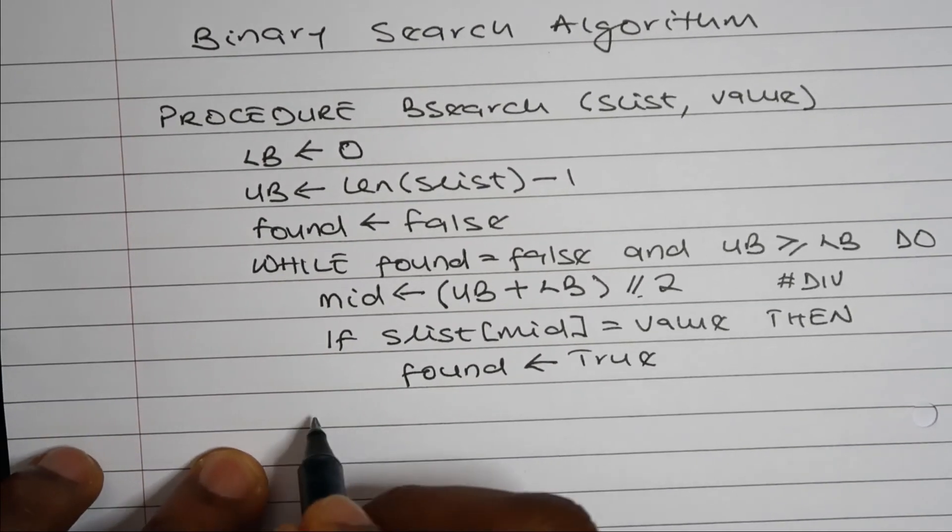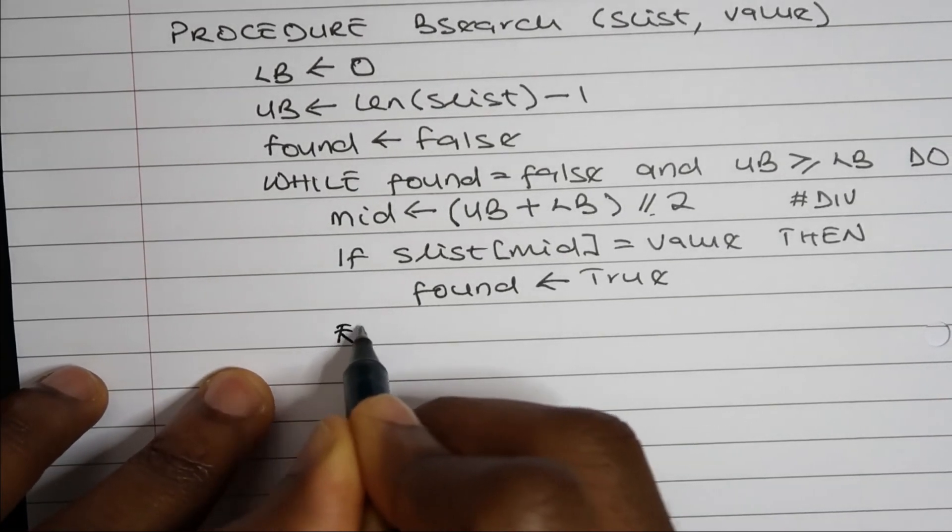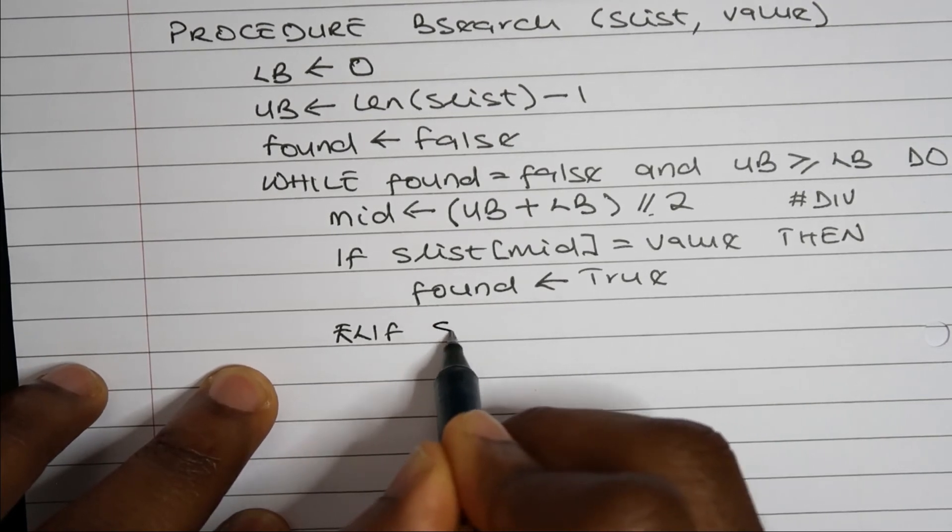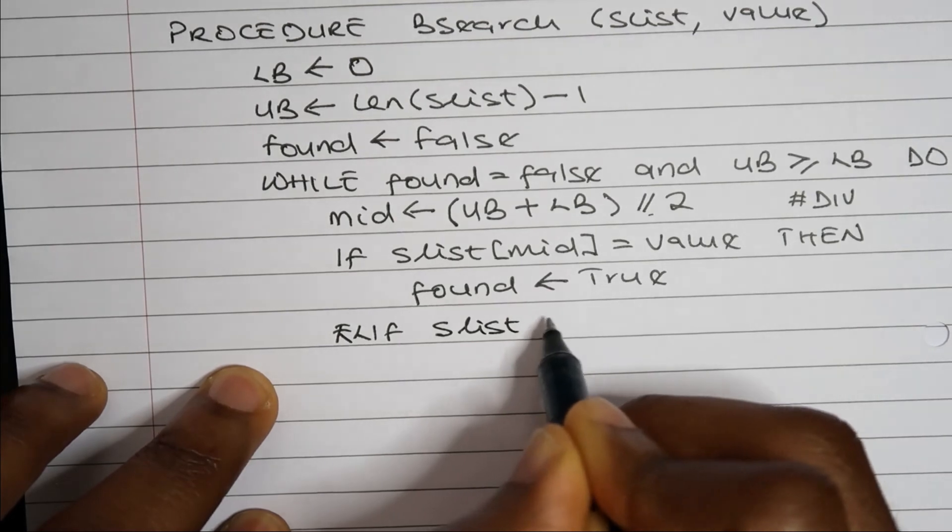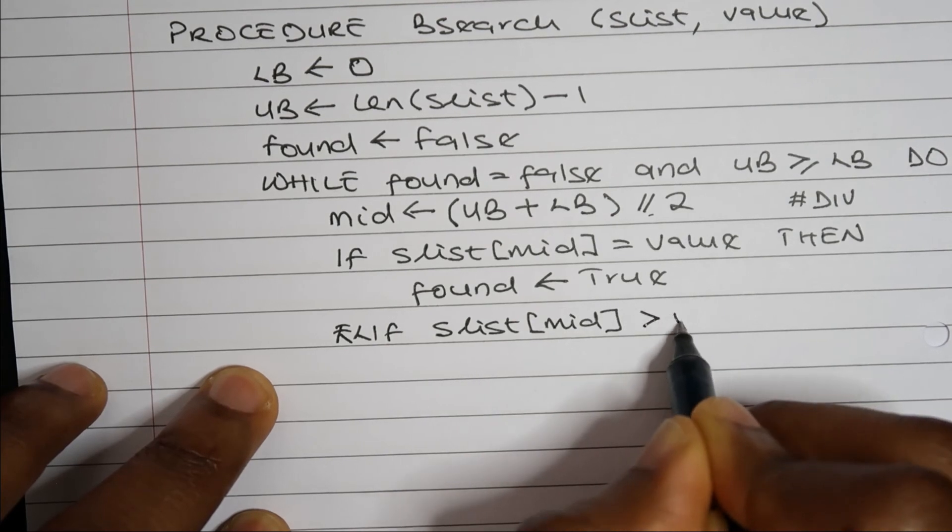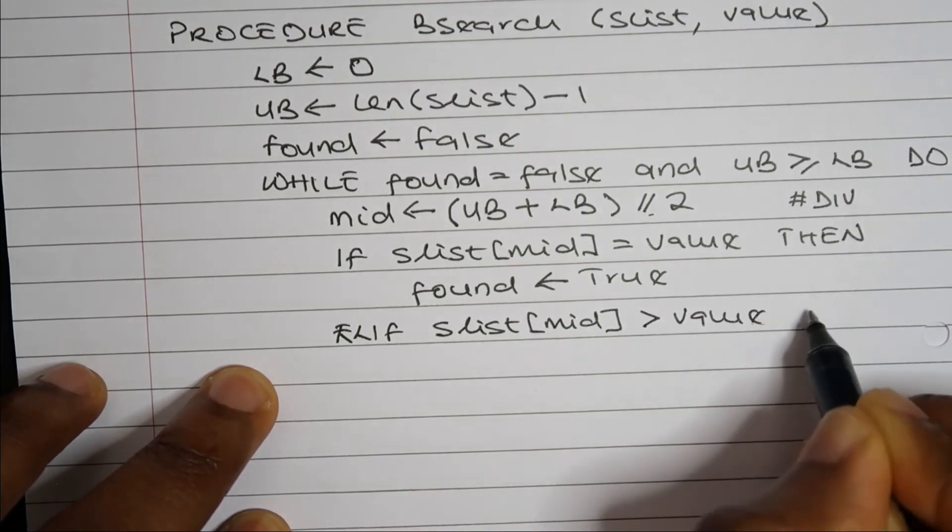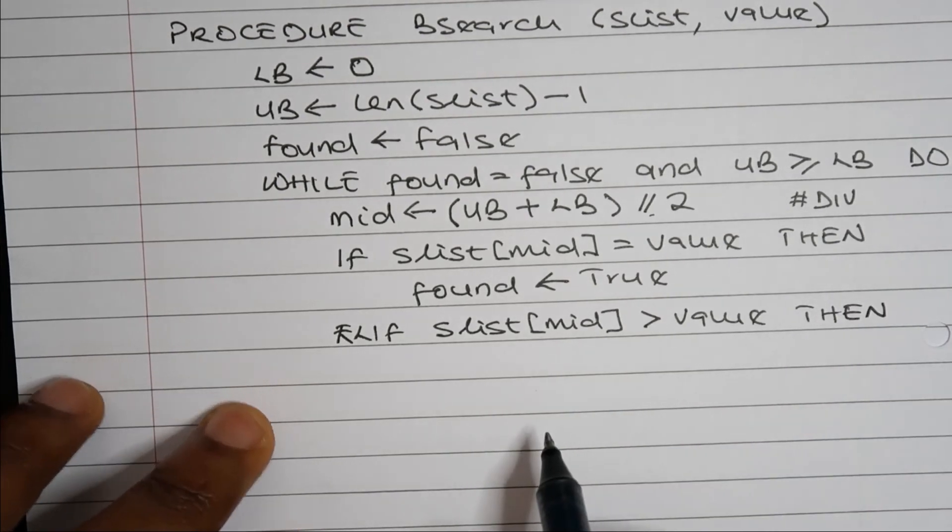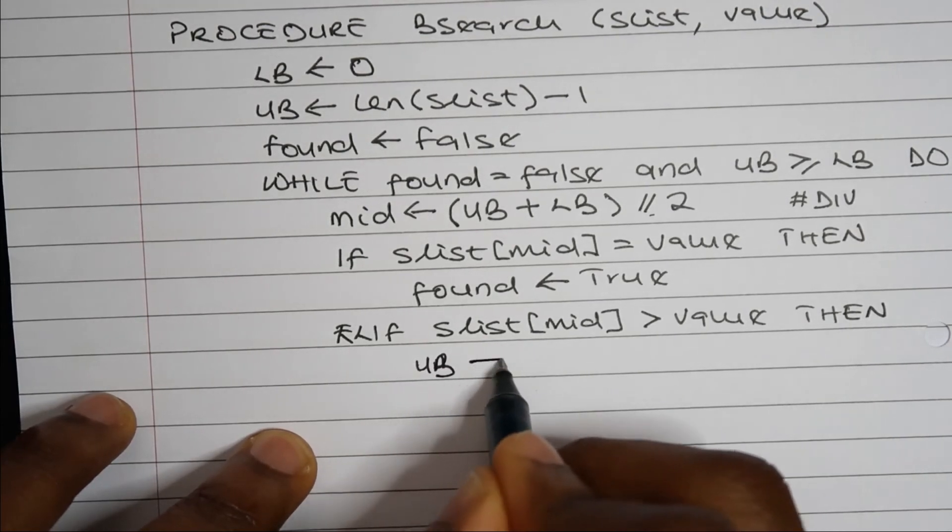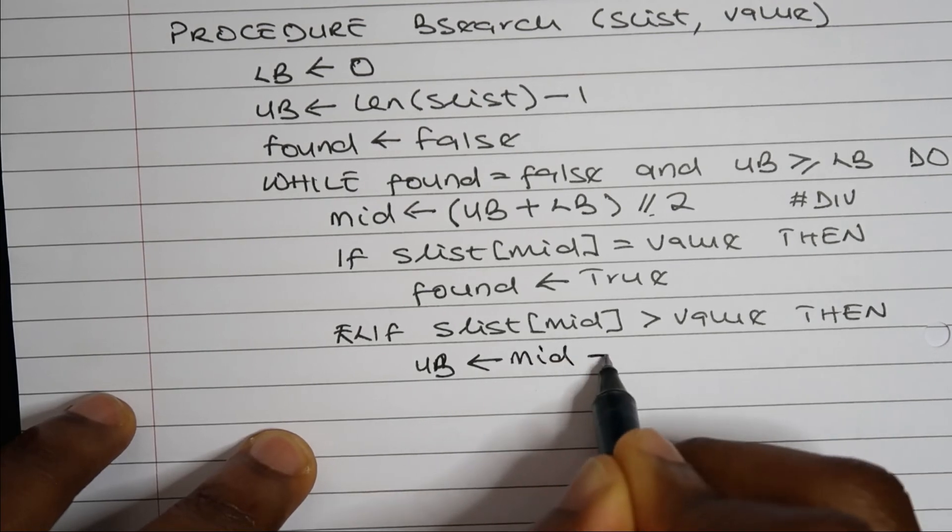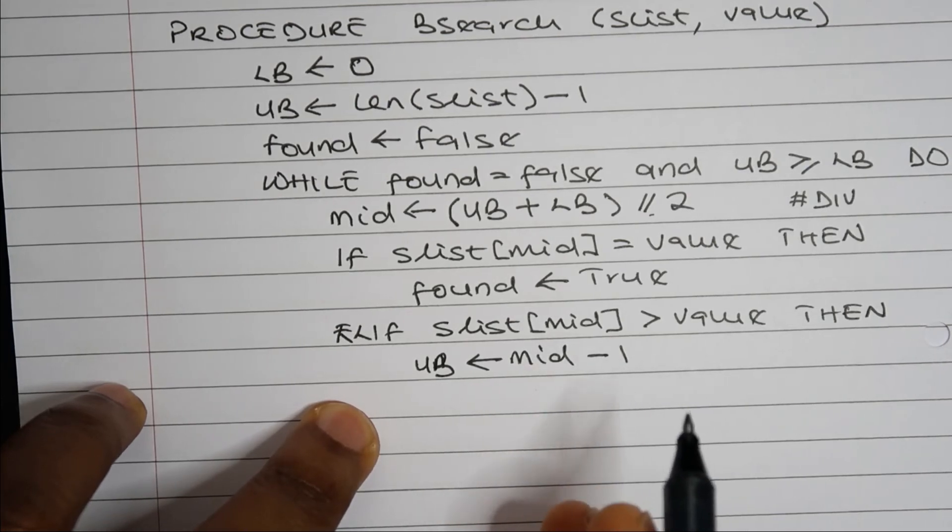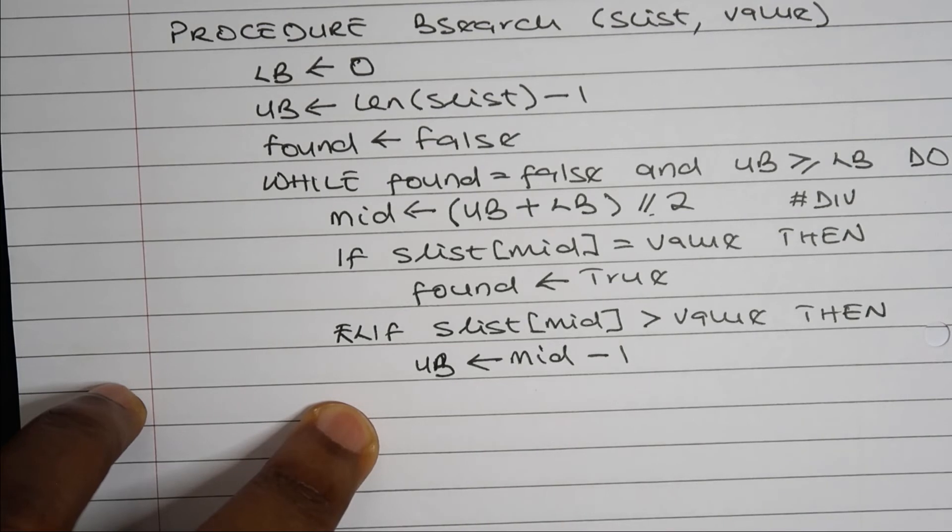Otherwise, so if it's not, what we want to compare is the value in SList in our midpoint. Is the midpoint of SList greater than the value that we're looking for? If it is, what needs to change now is we want our upper bound to be our midpoint minus one. At this point, we're technically discarding all the values from the midpoint to the end of the list.